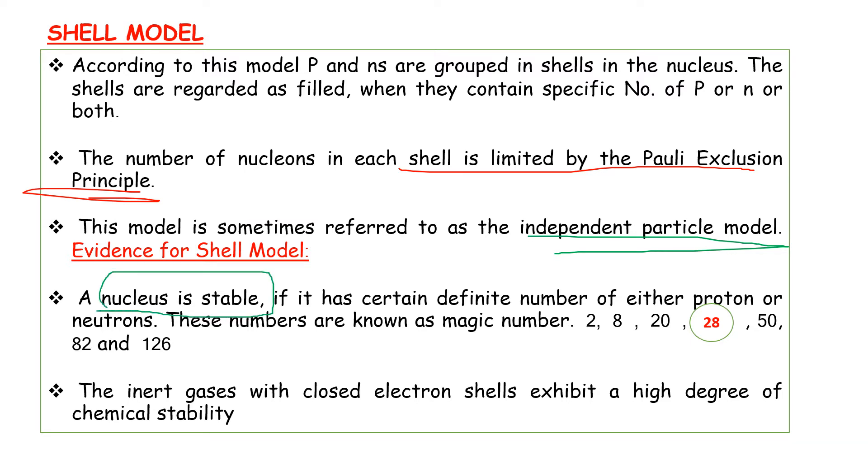A nucleus is stable if it has a certain definite number of either protons or neutrons. These numbers are known as magic numbers. The magic numbers are 2, 8, 20, 28, 50, 82, and 126. This is very important and has been repeated in previous PGTRP exams.